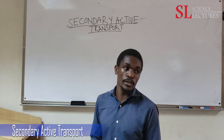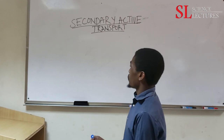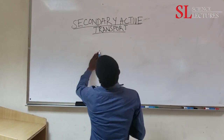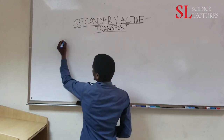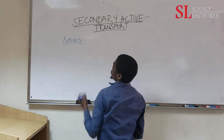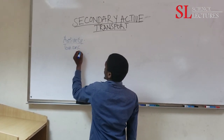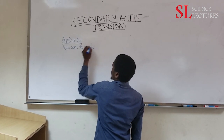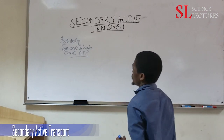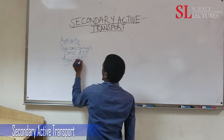We are continuing with our series on transport under cell biology. To take you back, we defined active transport as the transport of molecules from a region of low concentration to a region of high concentration, with the aid of energy in the form of ATP, against the concentration gradient.